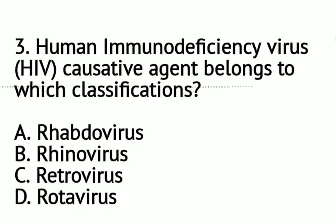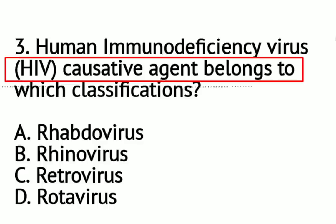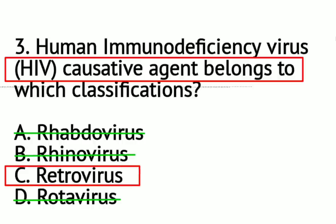Question number 3: The HIV causative agent belongs to which classification? A. Rhabdovirus, B. Rhinovirus, C. Retrovirus, or D. Rotavirus. Using elimination technique: rotavirus is the most common causative agent for diarrheal diseases among children, so that is not the answer. Rhabdovirus is the most common causative agent that causes rabies infection, so that is also not the answer. Between letter B and C, rhinovirus is the most common causative agent of the common cold. So the correct answer is letter C — Retrovirus is the causative agent of the human immunodeficiency virus.